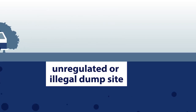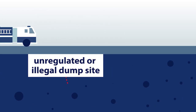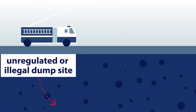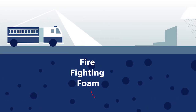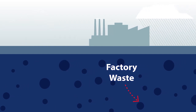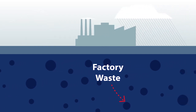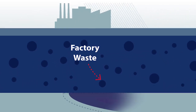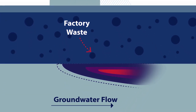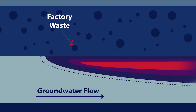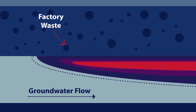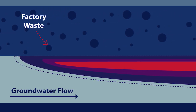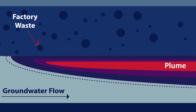Sources of PFAS could include unregulated dump sites, landfills, firefighting foams, and factory waste. PFAS can seep through the ground and eventually mix in and flow along with the groundwater — the water that can be found underground. The PFAS that is in groundwater is called a plume.